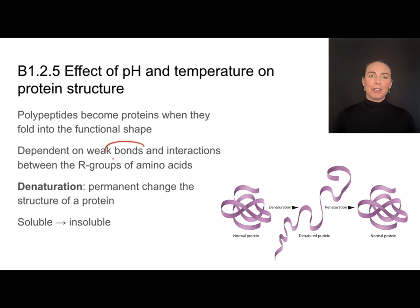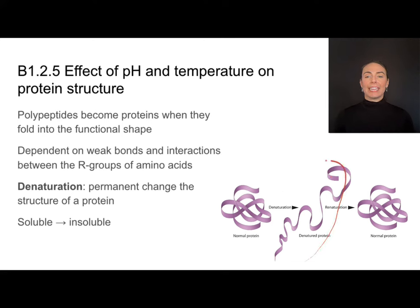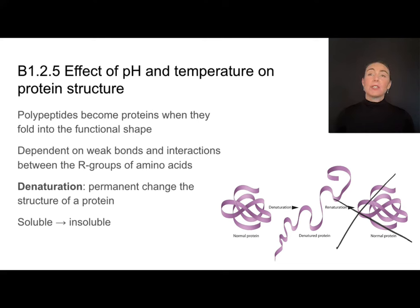That shape is determined by lots of different kinds of bonds and interactions, which we'll talk about later. But if that shape changes, it can signal a permanent change in the structure of the protein and, of course, the function — and we call that process denaturation. This is a permanent change in the structure of a protein. You can see how it causes such a drastically different shape that the normal functional protein won't be able to do its regular job. This often involves a protein that used to be soluble becoming insoluble.